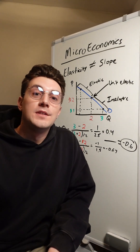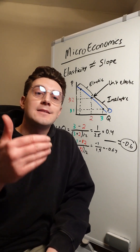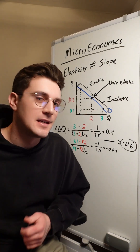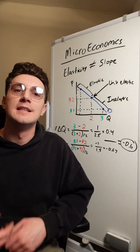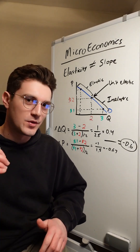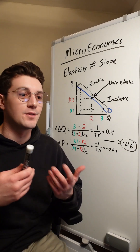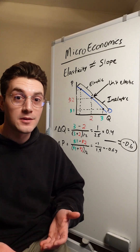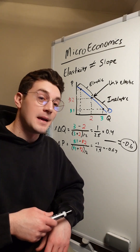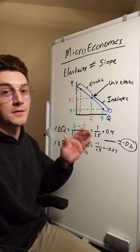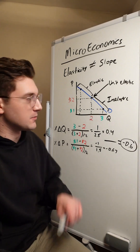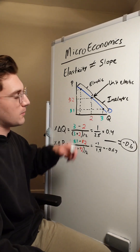That's why on the demand curve, elasticity does not equal slope — it depends on where your midpoint falls on the demand curve. With the supply curve, we can get lucky because of the direct relationship it holds, so slope just equals elasticity. But on the demand curve, it depends on where our midpoint falls due to that inverse negative relationship between price and quantity.